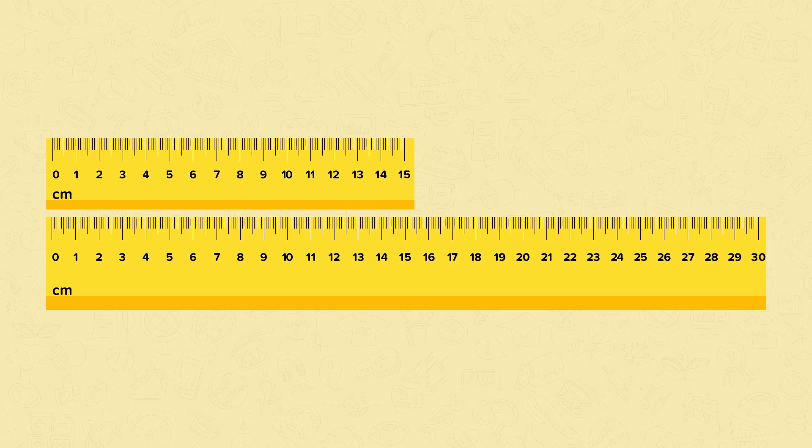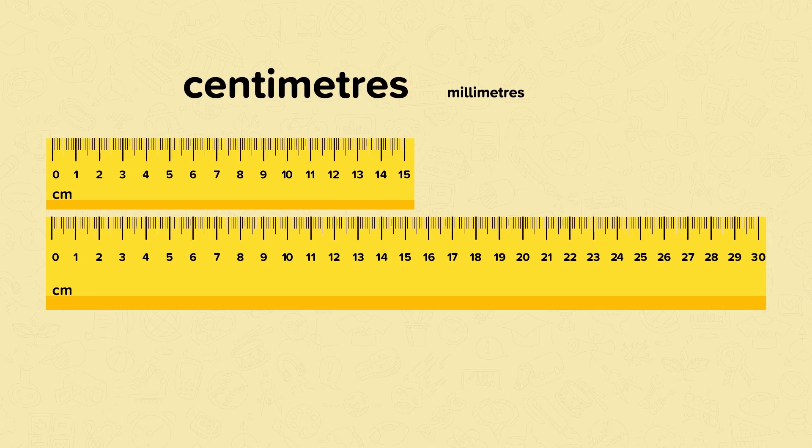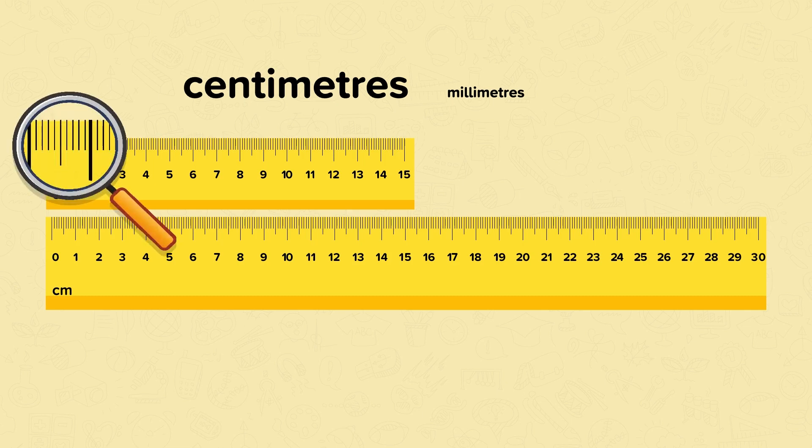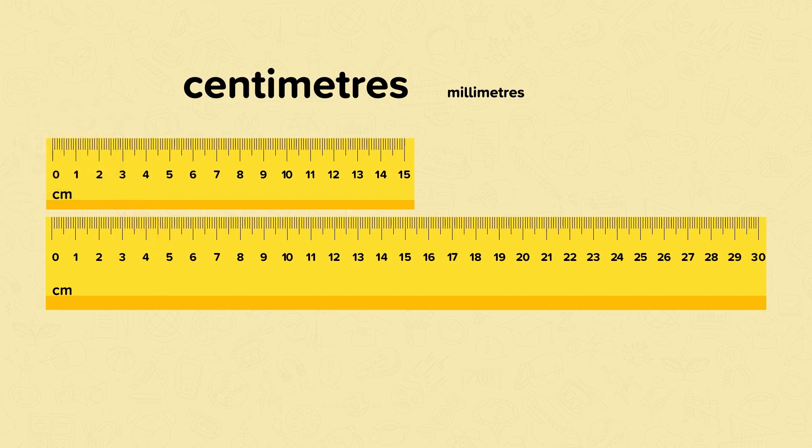Rulers can be used to measure in centimetres and millimetres. Centimetres are usually marked with long lines and numbers, and millimetres are a smaller unit of measure. They're marked by the shorter lines. In this nugget we're going to focus on measuring in centimetres, so we only need to focus on the longer lines and the numbers.